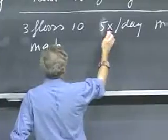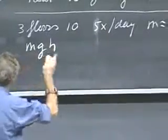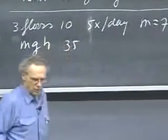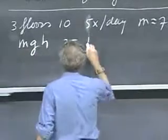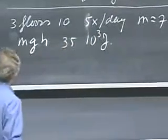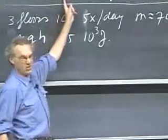The ten meters have to be multiplied by five because I do it five times. And so I get 35,000 joules of work that I do.